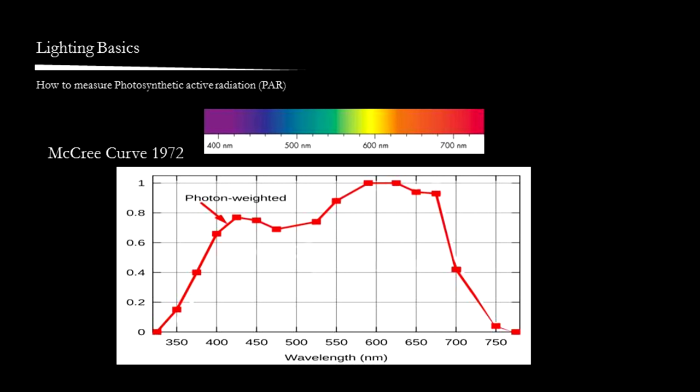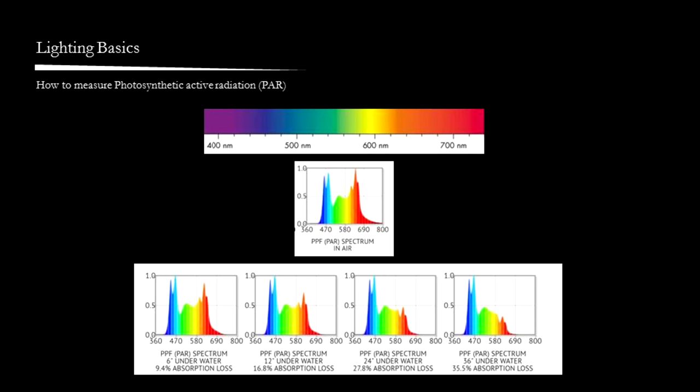From this chart, we can read that red light drives photosynthesis most efficiently, followed by blue light and lastly by green. However, the differences is not as large. One must also take into account that red light is most strongly absorbed by water compared to green and blue light and the deeper your tank, the more of it you'll lose.